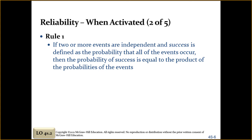Rule number one states that if two or more events are independent and success is defined as the probability that all of the events occur, then the probability of success is equal to the product of the probabilities of the events.